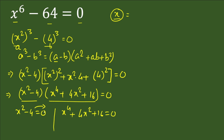From x² minus 4 equals 0, we get x² equals 4, so x equals plus or minus square root of 4, which is plus or minus 2. We have found two values of x: x = ±2.